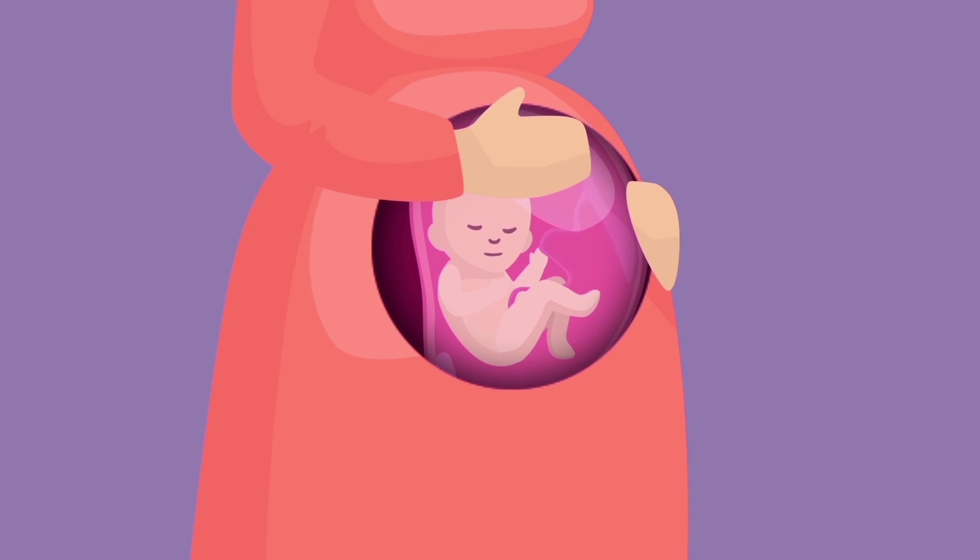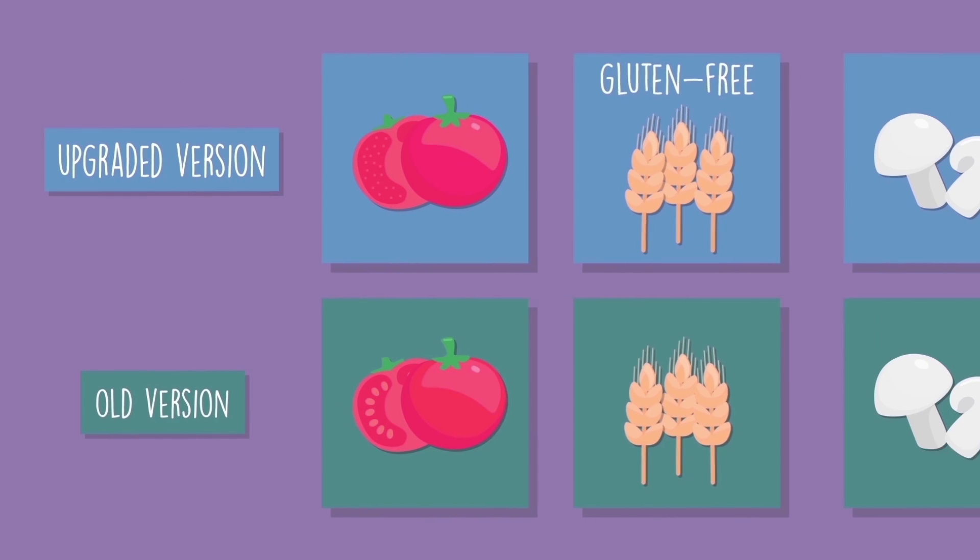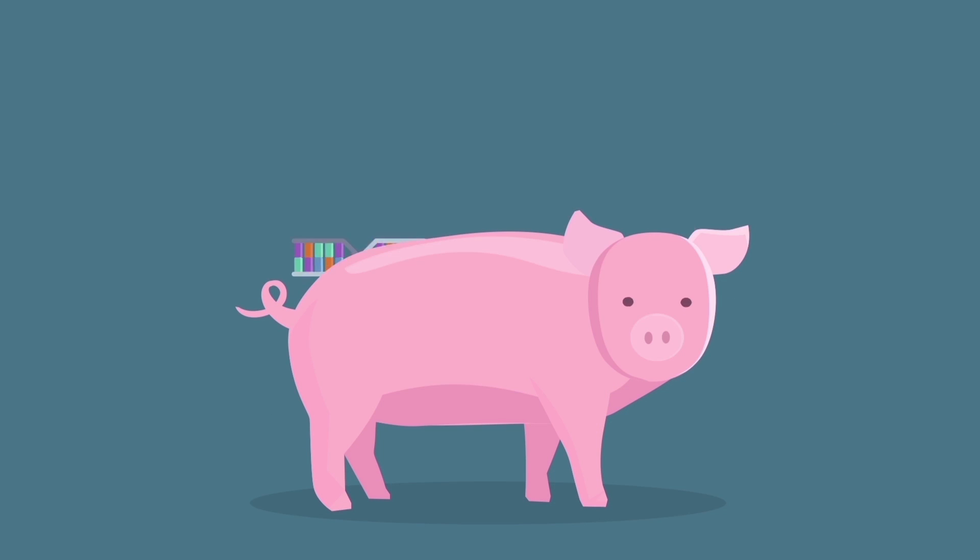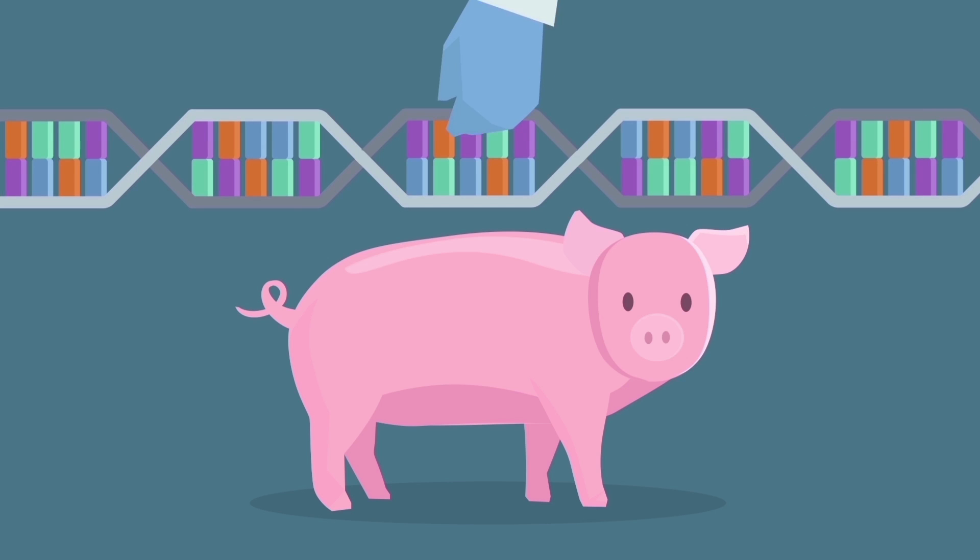Gene editing has also been used in the agricultural industry to create seedless tomatoes, gluten-free wheat, and mushrooms that don't turn brown. One of the more incredible things happening is that researchers have begun to use gene editing to make pig organs safe to transplant into humans.